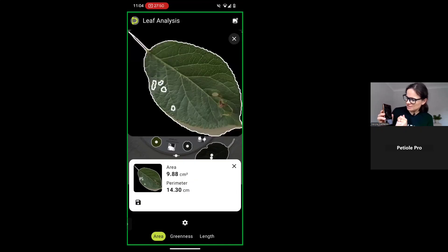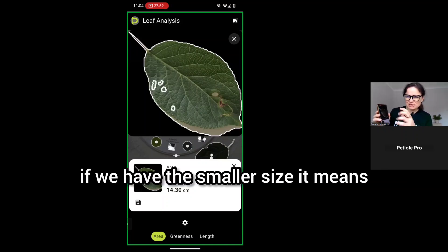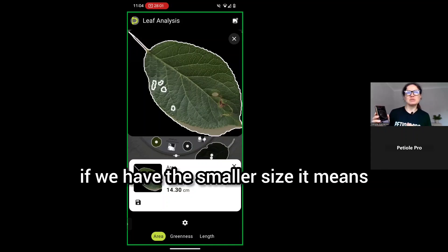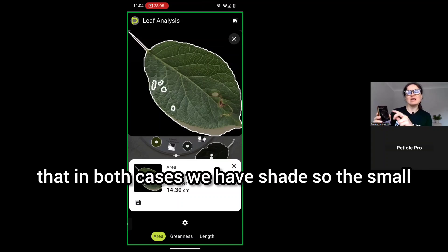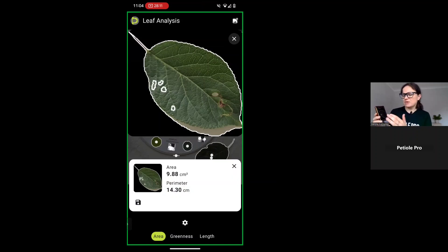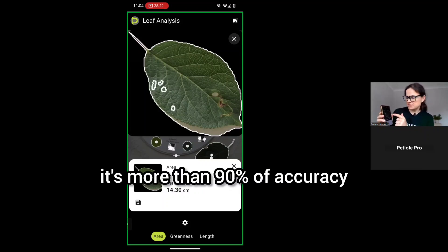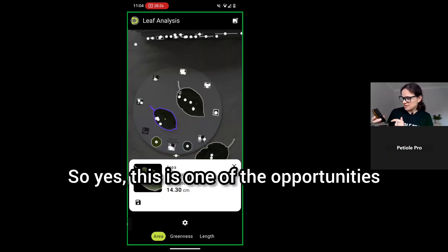Probably in this case you need to follow the HSV because it's probably less shade captured. Again, in both cases we have shade, but if we have the smaller size it means that it's more objective to have the small size considering that in both cases we have shade. The small size gives us a little bit more truth. But obviously we can't say that the area here is 100% accurate because we still have shade. But still again, it's more than 90 percent of accuracy.